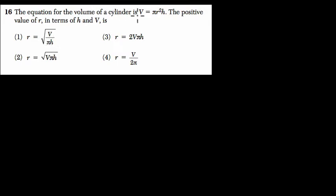Alright, so they tell us the equation for the volume of a cylinder is V = πr²h. So that's the area for a circle, πr², times the height of a cylinder. And that's how we find the volume of a cylinder. And they want to know the positive value of r in terms of h and V.